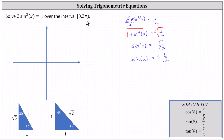Having a sine function value of one divided by the square root of two should remind us of a 45-degree angle, or a pi divided by four angle. Because we're looking for all angles over the interval from zero to two pi that have a sine function value of plus or minus one divided by the square root of two, we need to sketch a pi divided by four reference angle in each of the four quadrants.